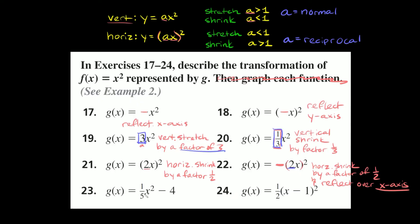Problem 23: g of x equals one-fifth x squared minus 4. No parentheses, so this is vertical. The number one-fifth is smaller than 1, so it's a vertical shrink by a factor of one-fifth — because for vertical, the factor is just the a number as-is. And we also have a minus 4 at the very end, so we're also translating it down 4 spaces.